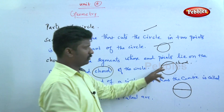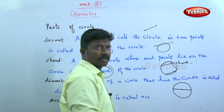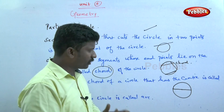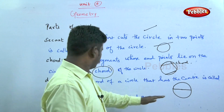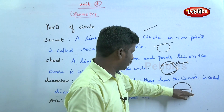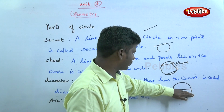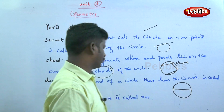Now, this is the chord, this is the chord — like that. Diameter is a chord of a circle that has the center; that is called the diameter.